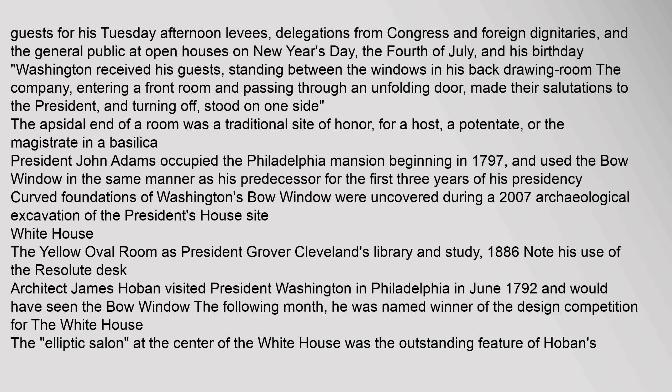Washington received his guests standing between the windows in his back drawing room. The company, entering a front room and passing through an unfolding door, made their salutations to the President, and turning off, stood on one side. The apsidal end of a room was a traditional site of honor for a host, a potentate, or the magistrate in a basilica. President John Adams occupied the Philadelphia mansion beginning in 1797 and used the bow window in the same manner as his predecessor for the first three years of his presidency.